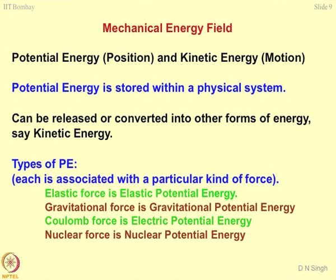Each one is associated with a particular kind of force. Elastic force is nothing but elastic potential energy. How would you compute the energy associated with a phenomenon? When you plot a load-deformation graph, you integrate the graph on the x-axis — work done is force multiplied by displacement dx. The integration of F dx gives you the energy stored in the system, which is elastic force as long as you are working in the elastic region. Gravitational force is nothing but gravitational energy — the position of a point with respect to another. Coulomb force is nothing but electrical potential energy, and nuclear force is nothing but nuclear potential energy.